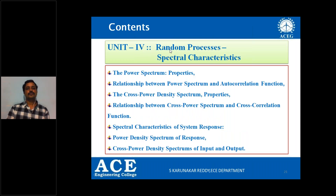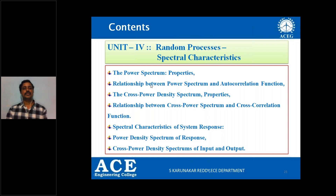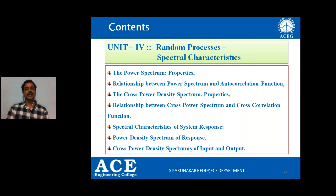Unit 4 covers random process spectral characteristics — the power spectrum. Spectral characteristics means we'll see things in the frequency domain, while temporal characteristics are in the time domain. We'll cover the relation between power spectrum and autocorrelation function, cross-power density spectrum properties, the relation between cross-power spectrum and cross-correlation function, spectral characteristics of a system response, power density spectrum of the response, and cross-power density spectrums of input and output when spectral characteristics are applied to a linear system.